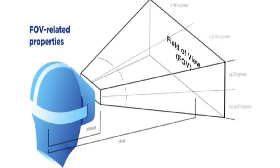FOV, o Field of View. Así se define el ancho de visión que nos proporciona nuestro casco virtual, es decir, la cantidad de espacio visible que dispondremos en el mismo. En los primeros modelos de cascos virtuales, la sensación visual de este FOV, al ser más limitado, era de tener puestas unas gafas de buzo.